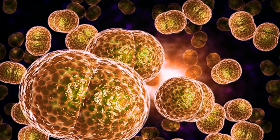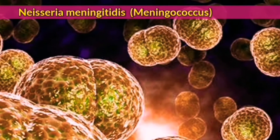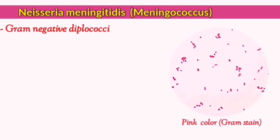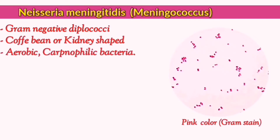Neisseria meningitidis is also known as meningococci and is similar to the other members of the Neisseria genus because it is a gram-negative diplococcus which appears pink following gram staining. It also shares the familiar kidney or coffee bean shape. Meningococci are aerobic, preferring to grow in 5-10% CO2, which is referred to as capnophilic.